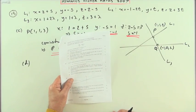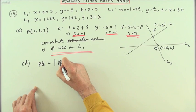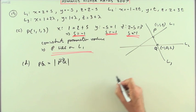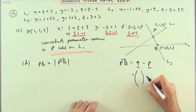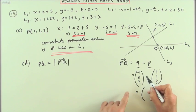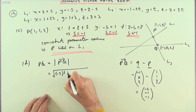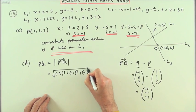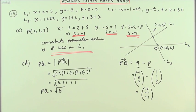Part D: PQ is the shortest distance between lines L1 and L2 — calculate PQ. The vector PQ = Q − P = (−1 − 1, 0 − 1, 2 − 3) = (−2, −1, −1). The length is √(4 + 1 + 1) = √6. The shortest distance PQ is √6.